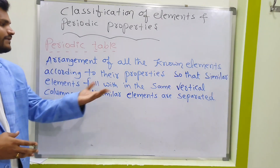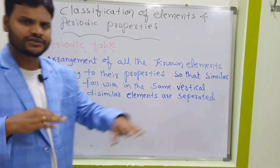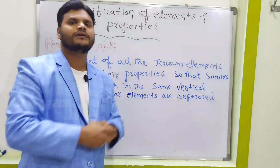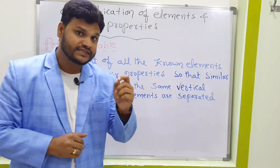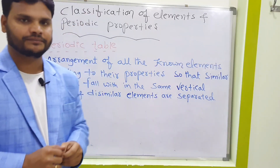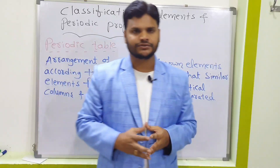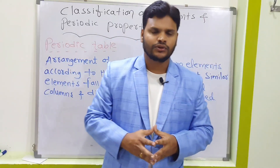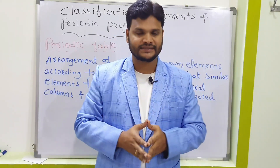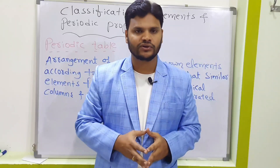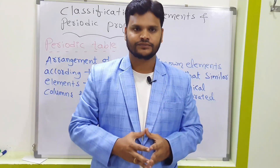Vertical column is nothing but a group — don't get confused. Dissimilar elements are separated in horizontal rows. Horizontal is nothing but a period. Total, the periodic table contains how many known elements? Till date, total 118 elements are there.